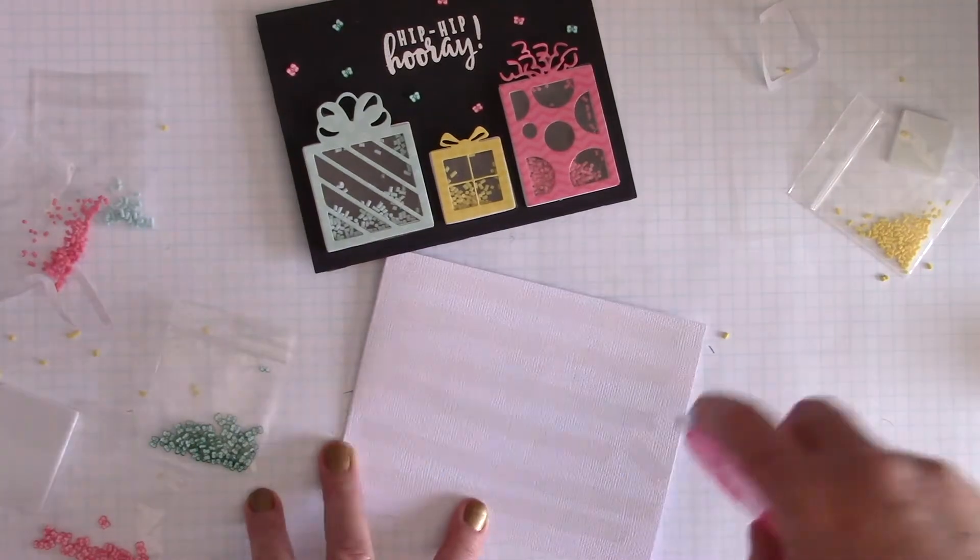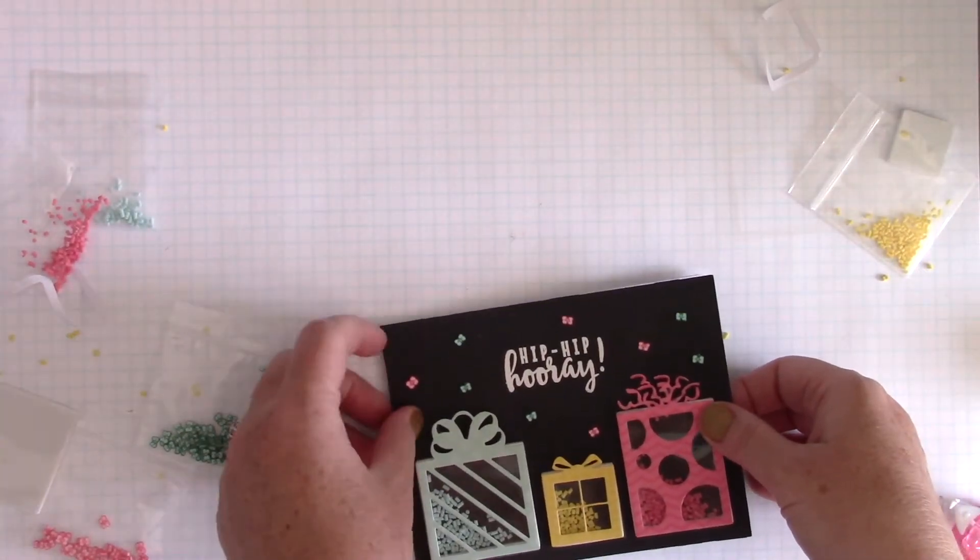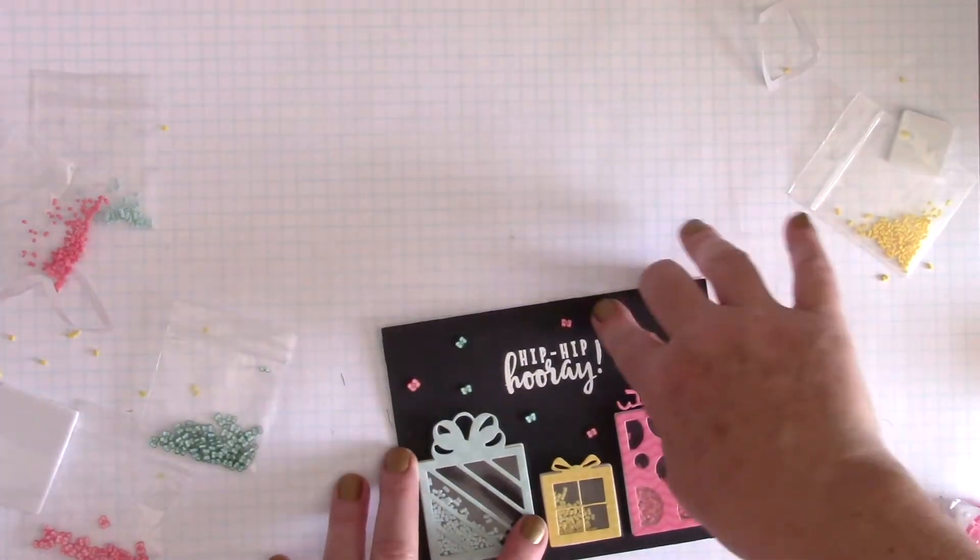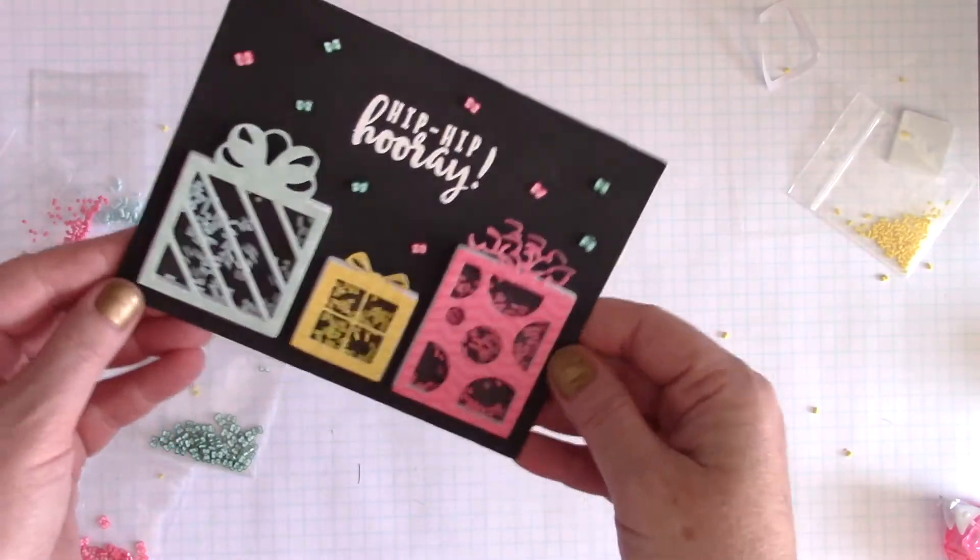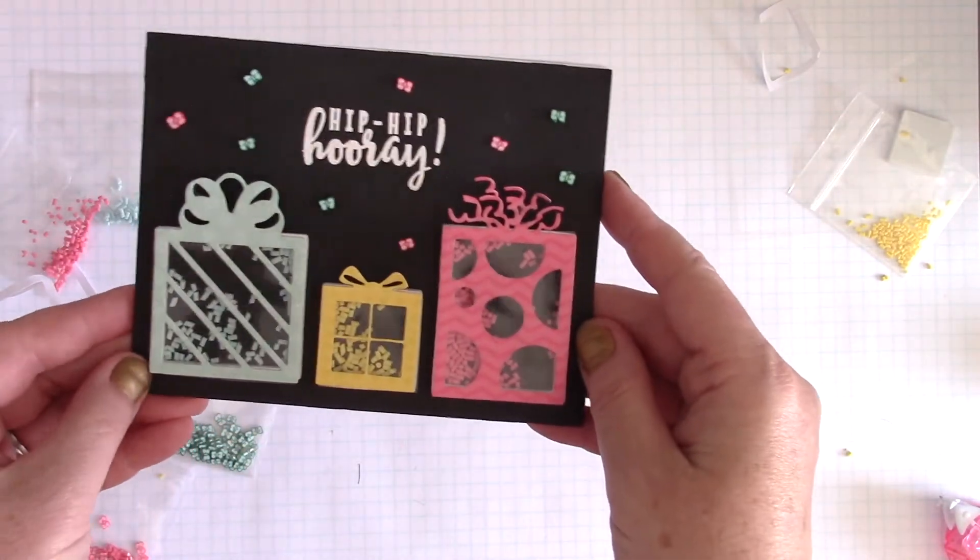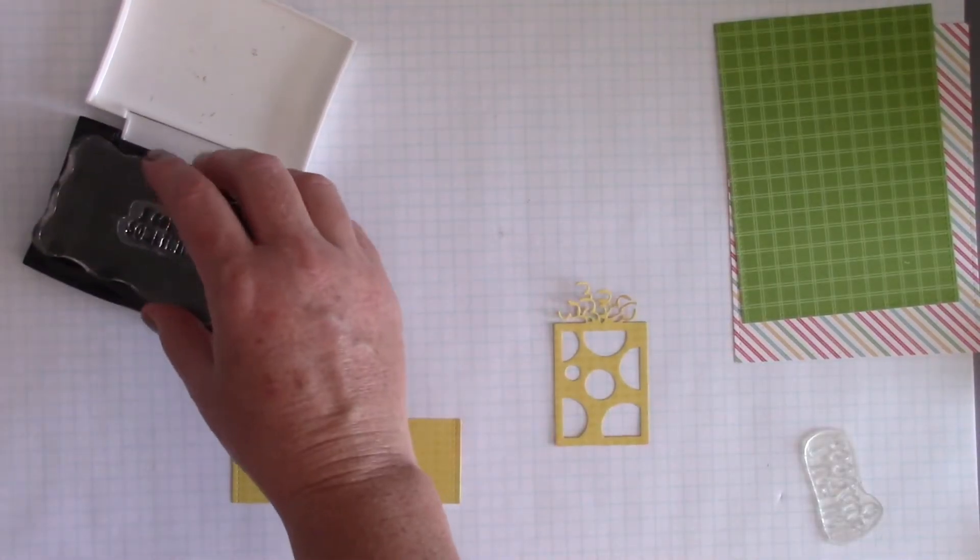And once that's done, my card panel is pretty much completed, so I can add it to the front of a four and a quarter by five and a half side folding card there. And I like to do this with black cardstock onto white card bases so that you can write your sentiments or inscription on the inside. And you can see how all those little shaker sprinkles just move around so well and it just adds so much dimension to the card.